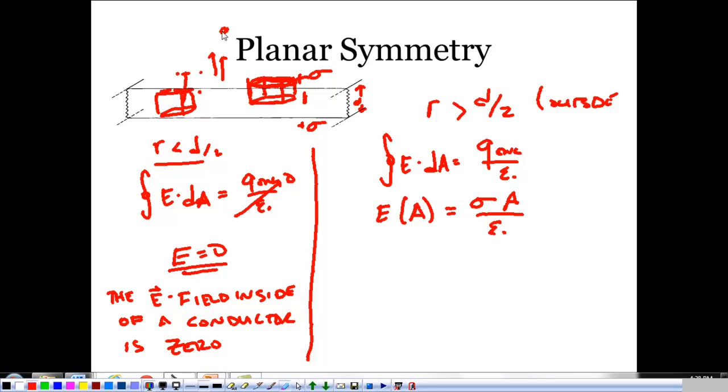So on one side of this thing, see that A goes away? My electric field is just sigma over epsilon naught.